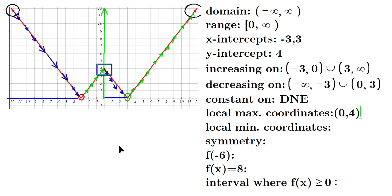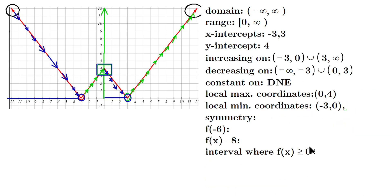Local min coordinates: at negative three, the lowest Y coordinate is zero. And at positive three, the lowest Y coordinate is also zero. So the local min coordinates are the points negative three comma zero, and three comma zero. For symmetry — the piece to the right of the vertical axis is identical to the piece on the left side. They look like mirror images, so we have even symmetry.